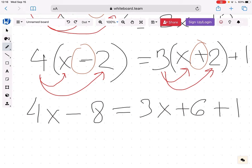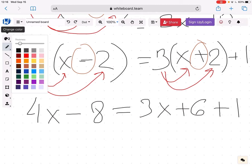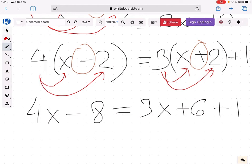Now, let's first simplify it a little bit before we start multiplying the equation by some numbers. What we see here is 6 plus 1, this is 7. So let's just do that first. We get 4x minus 8 equals 3x plus 7.